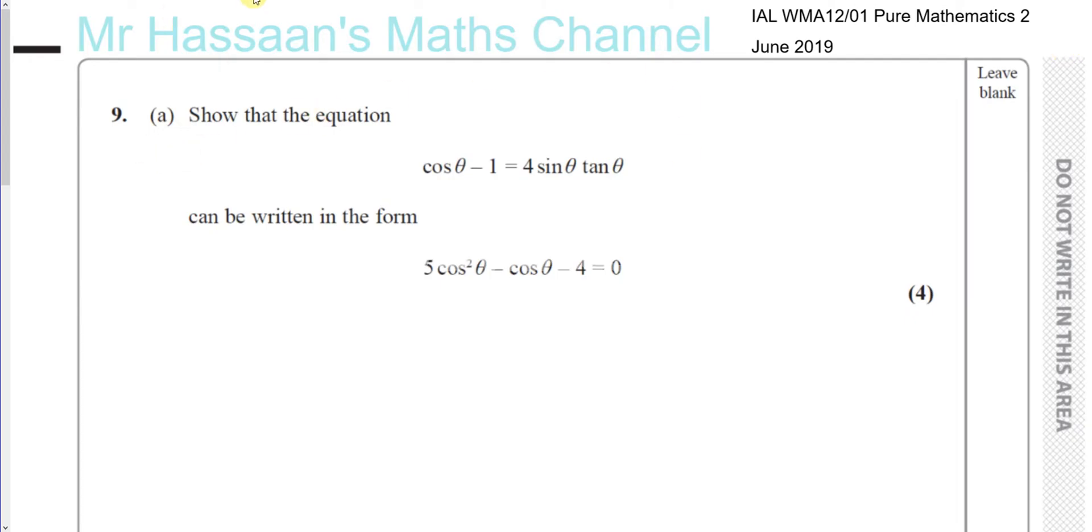And here we are asked to show that this equation, cosine theta minus 1 equals 4 sine theta tan theta, can be written in the form 5 cosine squared theta minus cosine theta minus 4 equals 0.